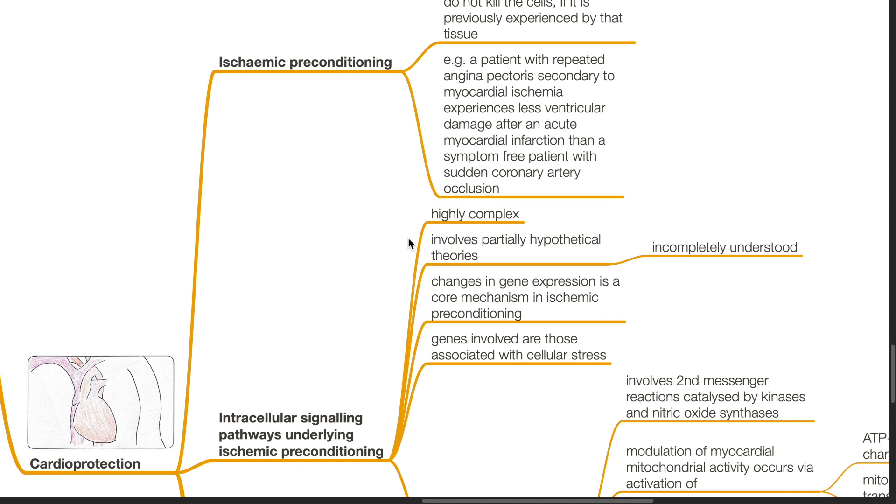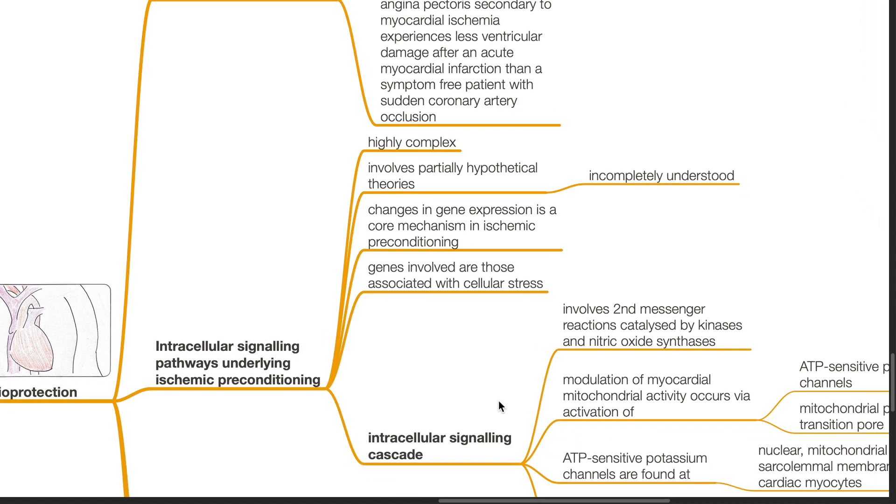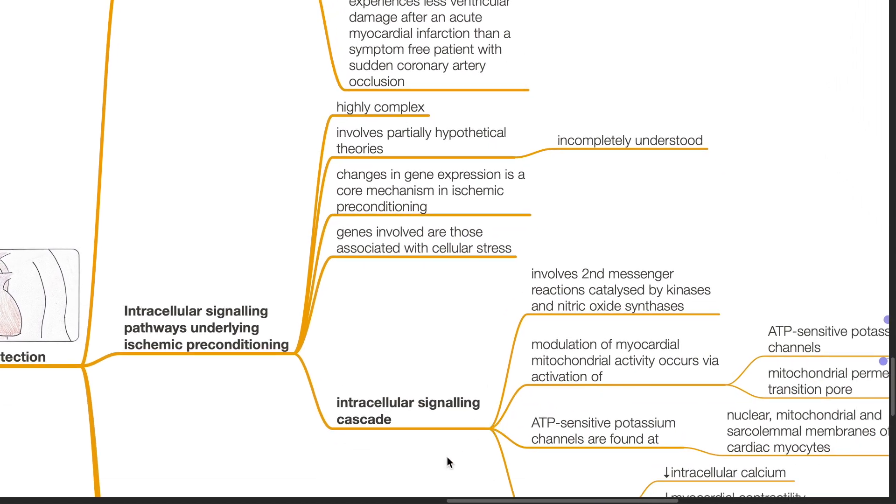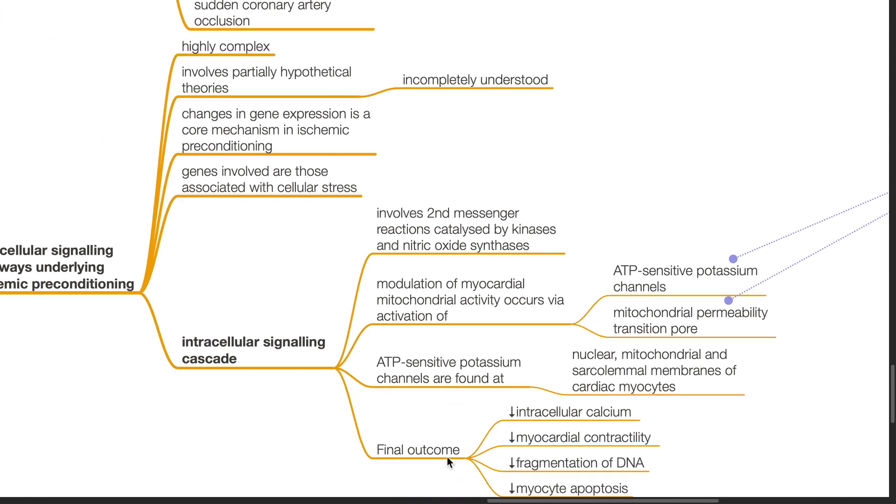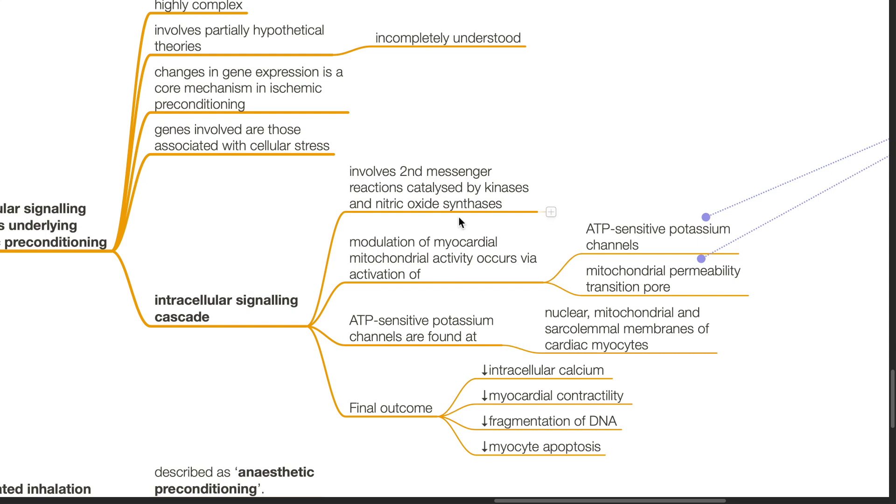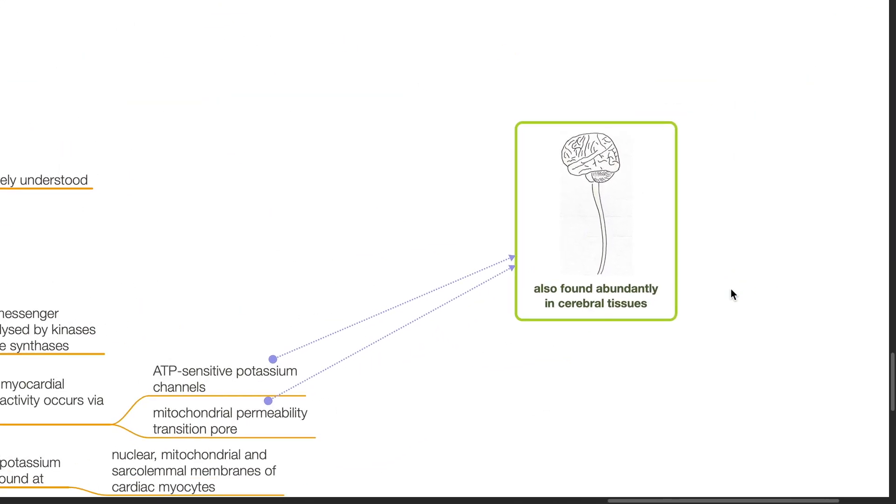The intracellular signaling pathways underlying ischemic preconditioning are highly complex and involve partially hypothetical theories and are incompletely understood. Changes in gene expression are a core mechanism in ischemic preconditioning. Genes involved are those associated with cellular stress. The intracellular signaling cascade involves second messenger reactions catalyzed by kinases and nitric oxide synthetase. Modulation of myocardial mitochondrial activity occurs via activation of ATP-sensitive potassium channels and mitochondrial permeability transition pore.